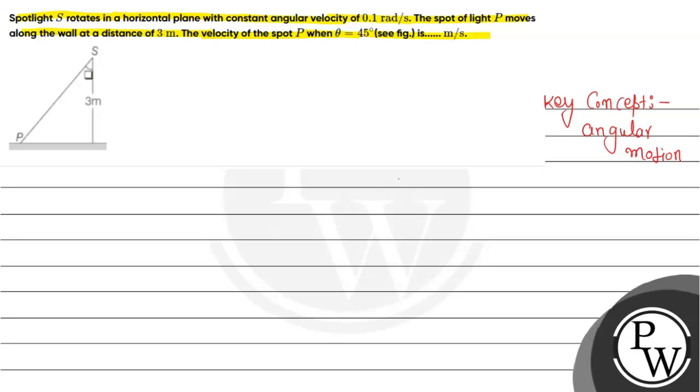According to the question, we have a spotlight which is rotating in a horizontal plane. The angular velocity omega is given as 0.1 radian per second, and P is moving along the wall at a distance of 3 meters. We need to find the velocity of spot P when theta equals 45 degrees.